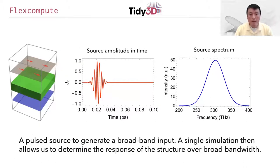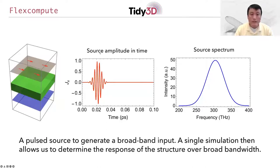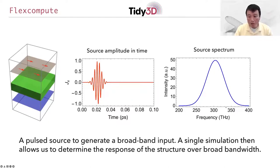One of the very important capabilities in FDTD simulation is that you can set up a pulsed source so that you can get a broadband response of a given structure — in other words, the response over a wide range of frequencies in a single simulation. In our case, we set up a source amplitude in time so that the current oscillates at a carrier frequency but has a Gaussian envelope in time. This is the corresponding spectrum of the source. With this particular time-dependent source, the spectrum covers a frequency range of about 100 terahertz around the 300 terahertz carrier frequency. So we are using a pulsed source to generate a broadband input in order to determine the response of the structure over a broad bandwidth.